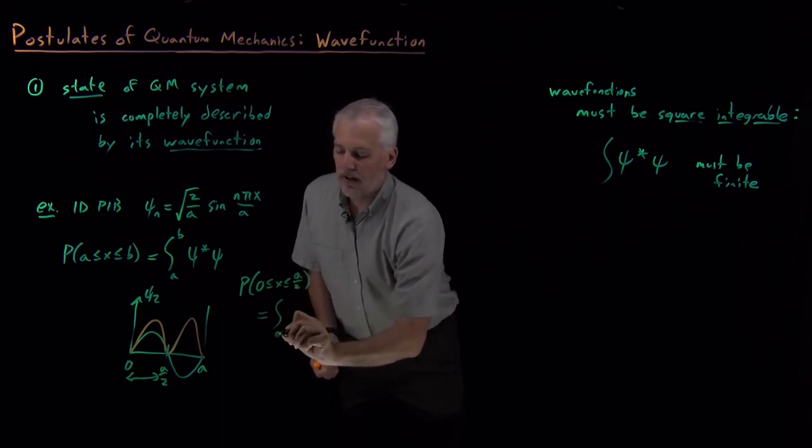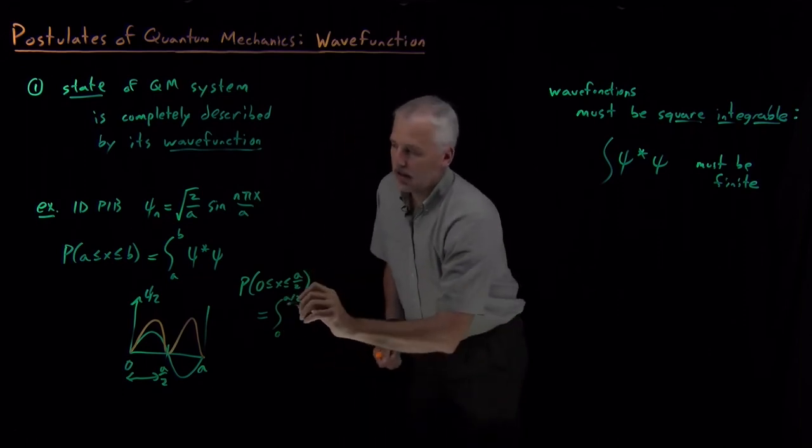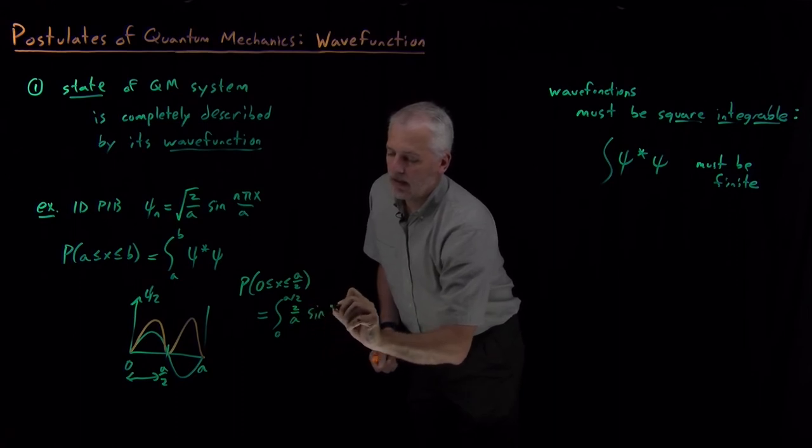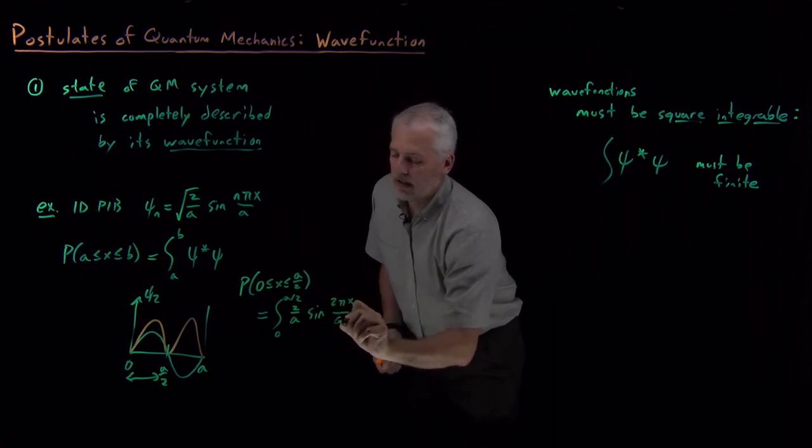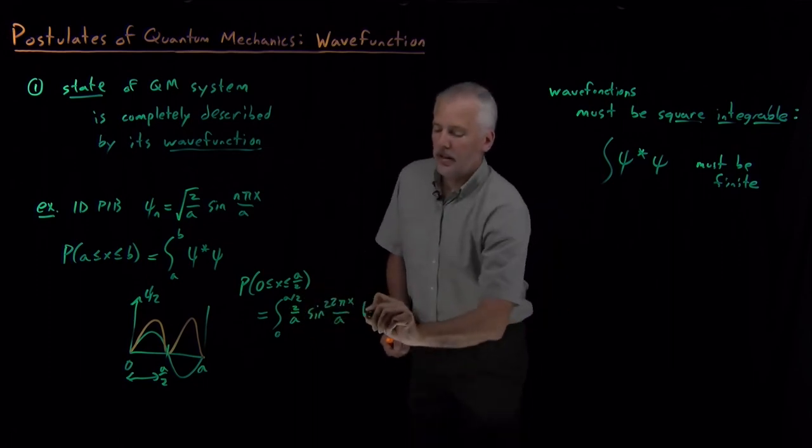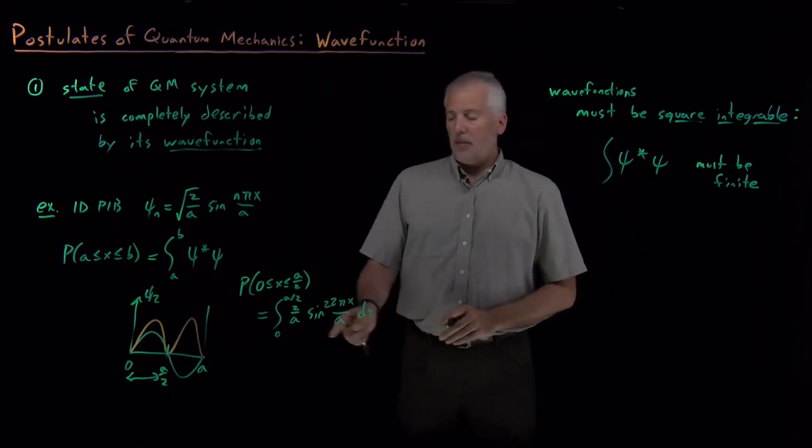In other words, if I integrate from zero to a/2 the wave function squared—so 2/a times sine of 2πx over a, squared. If I do that integral, we could do the integral mathematically,